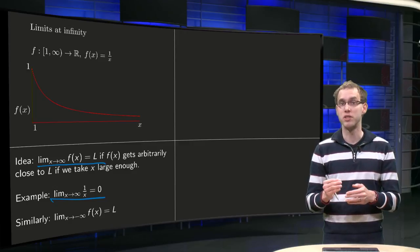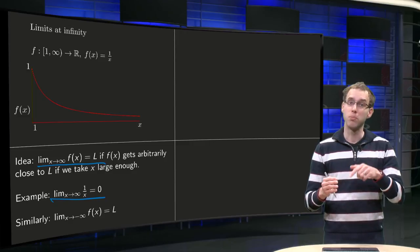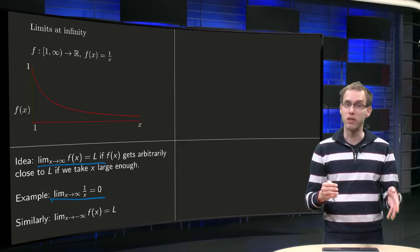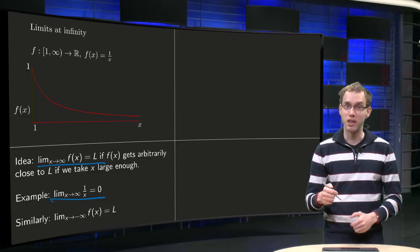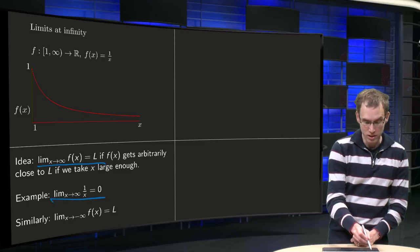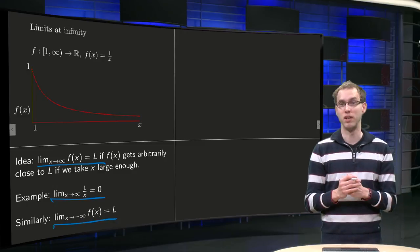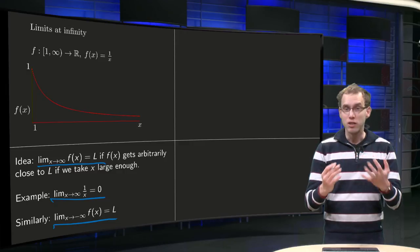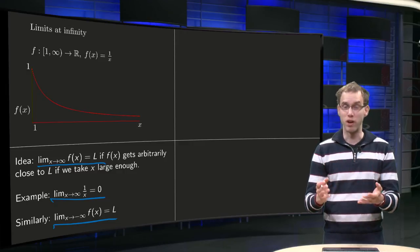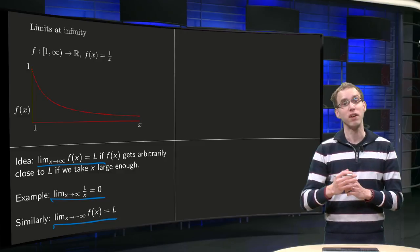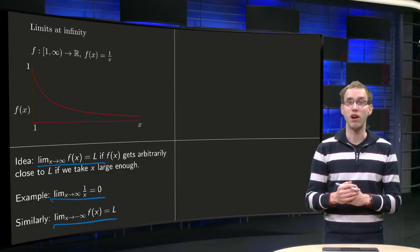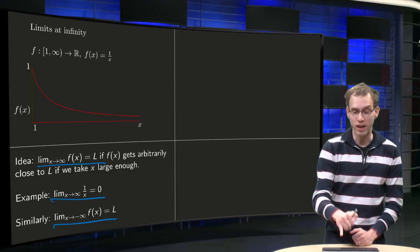Similarly, look at what happens if we take x smaller and smaller in the negative direction — minus 1, minus 10, minus 100 — and if the function values then become arbitrarily close to some value L, we say the limit as x → −∞ of f(x) equals L. So in this first example, f(x) = 1/x tends to a finite value if x becomes very large, but we can have other examples.